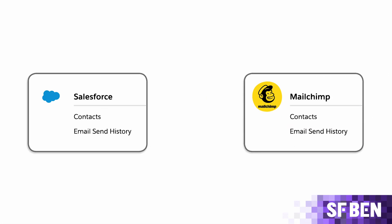In our final example, we have Salesforce connected to a marketing solution like MailChimp. We want to be able to send customer data to MailChimp to add individuals to mailing lists, and then in Salesforce receive data from MailChimp on the number of sends, opens, clicks, etc. In this instance, the customer data is being sent outbound from Salesforce to MailChimp, as well as data being sent inbound from MailChimp to Salesforce, and so the integration is bi-directional.